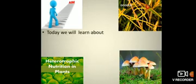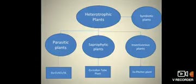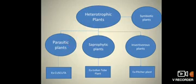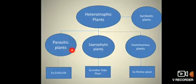In this session we will study about the different types of heterotrophic nutrition. Let's see the chart. In this chart we will study about heterotrophic plants. The first type is called the parasitic plant. An example of a parasitic plant is Kuskuta. These parasitic plants take nutrition from another plant or other resources and cause harm to them.